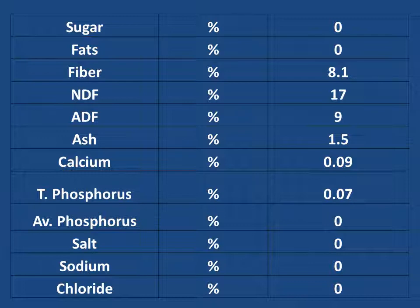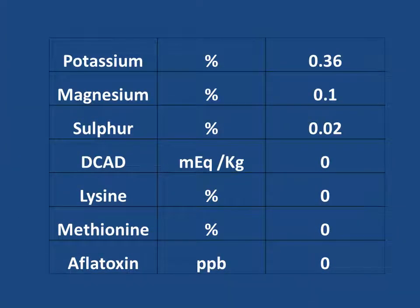Detergent fiber percentage: 17%. Acid detergent fiber percentage: 9%. Ash percentage: 1.5%. Calcium percentage: 0.09%. Total phosphorus percentage: 0.07%. Available phosphorus percentage: 0%. Salt percentage: 0%. Sodium percentage: 0%. Chloride percentage: 0%. Magnesium percentage: 0.1%. Sulfur percentage: 0.02%.